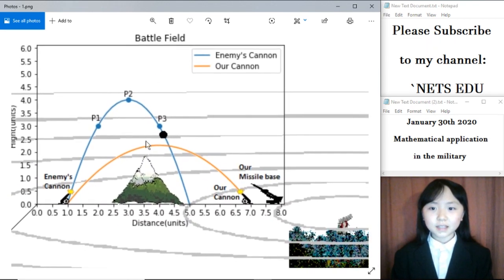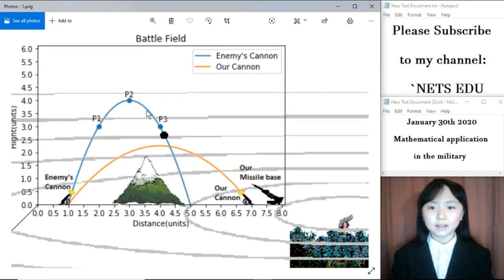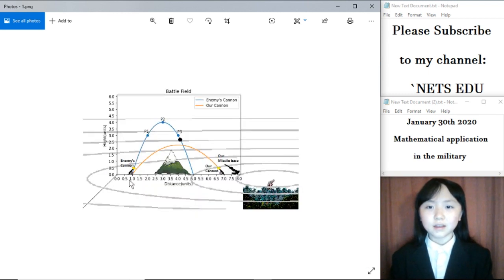With these three coordinates, they can find where the enemy's cannon is located and where the cannonball will land, given that when an object is thrown or launched into the air, the trajectory of that object will always be a parabola.